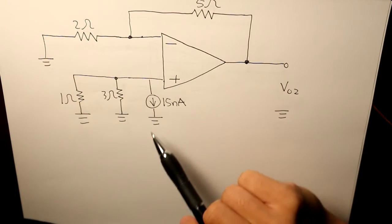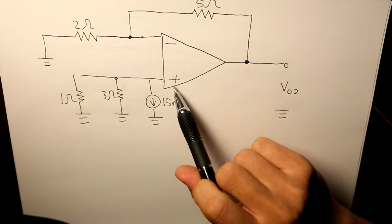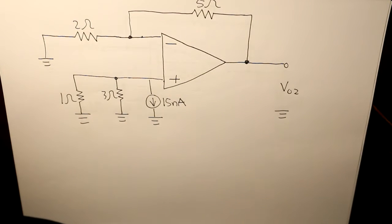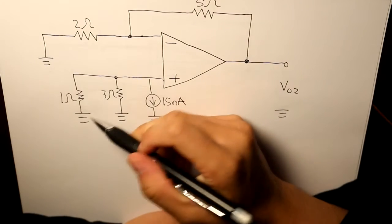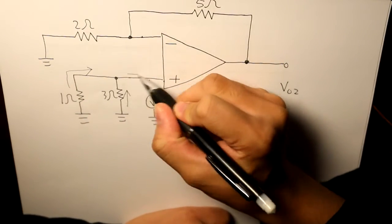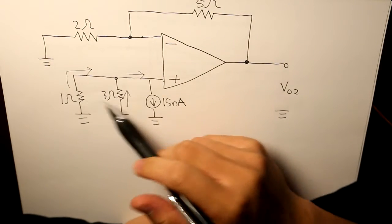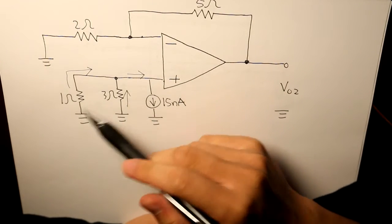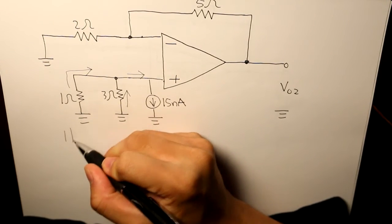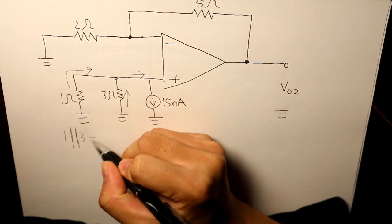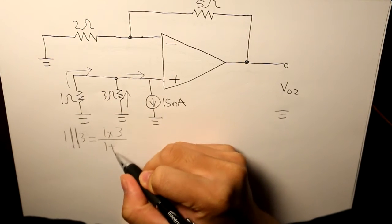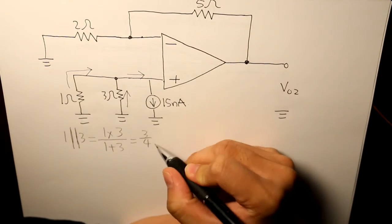Moving on, we have our bias current entering around the positive input terminal. This time our current is flowing through like this. What we can do is take these two resistors in parallel, so that would be 1 times 3 over 1 plus 3, and that would be 3 over 4 ohms.